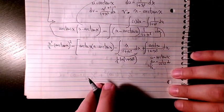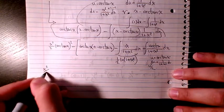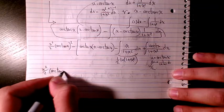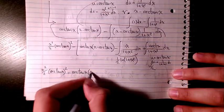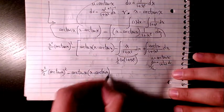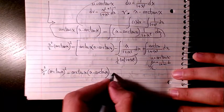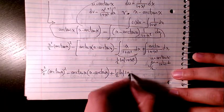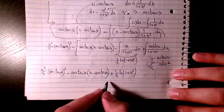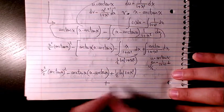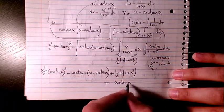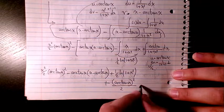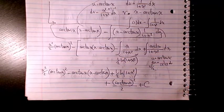So the final answer is x²/2 · arctan(x)² minus arctan(x)·(x − arctan(x)) plus (1/2)·ln(1 + x²) plus arctan(x)²/2 plus a constant C.